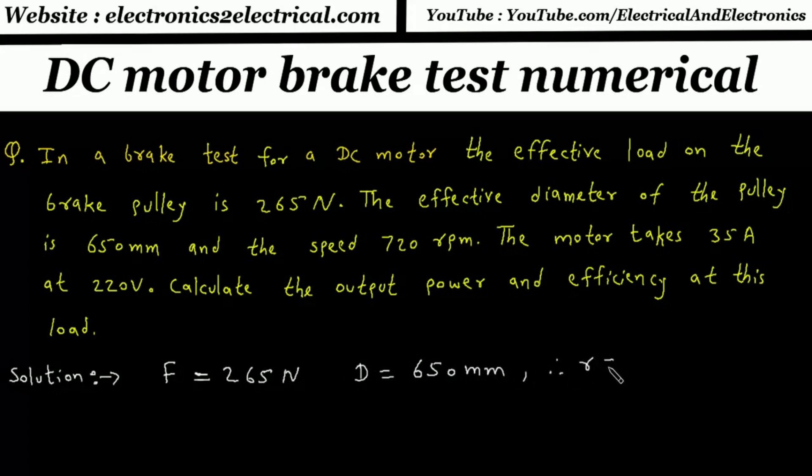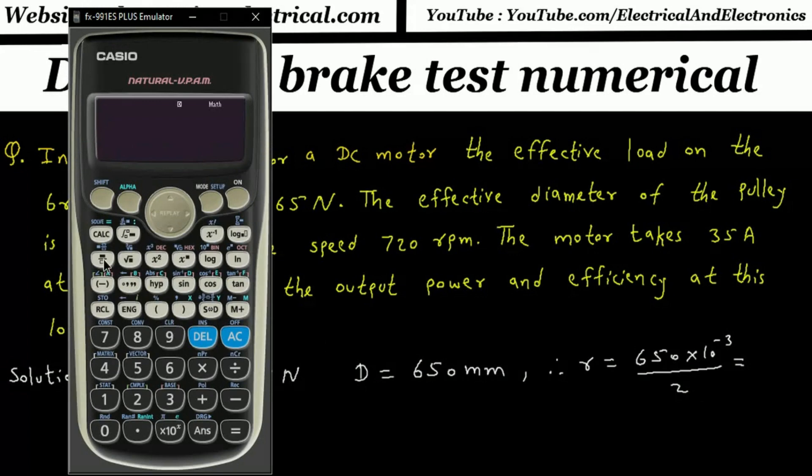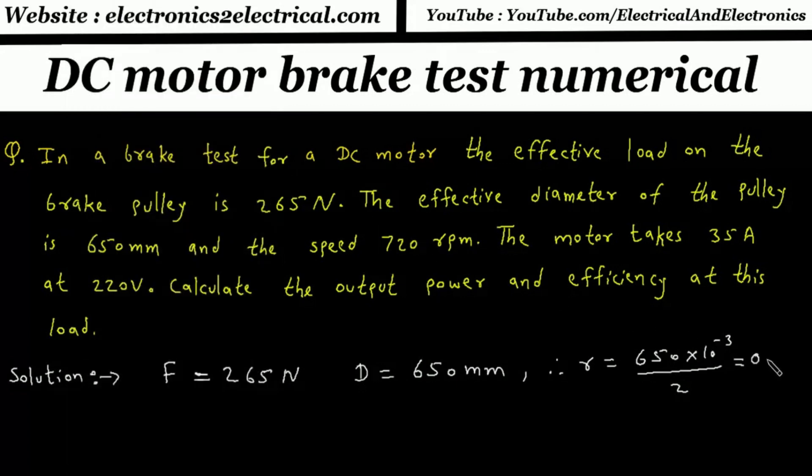Therefore, R equals 650 times 10 to the power minus 3 divided by 2, which equals 0.325m.